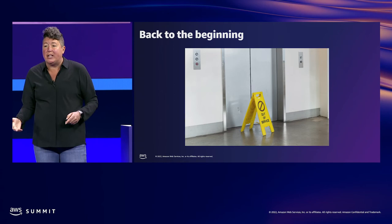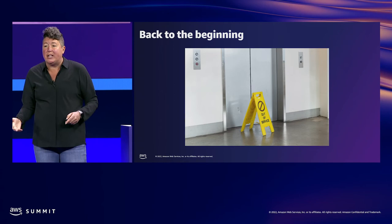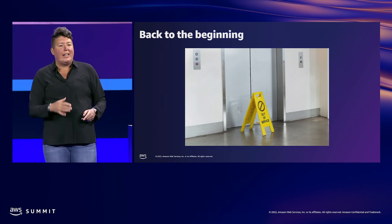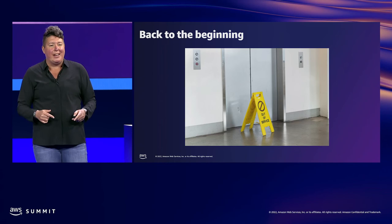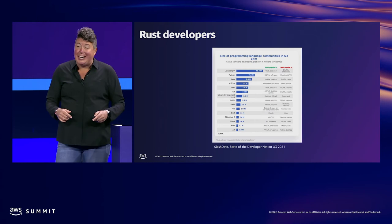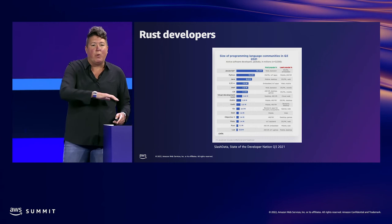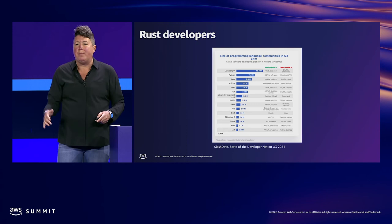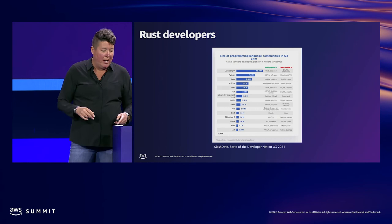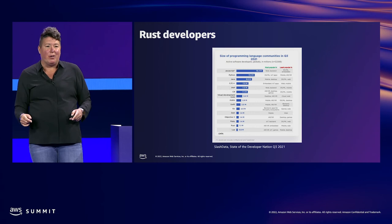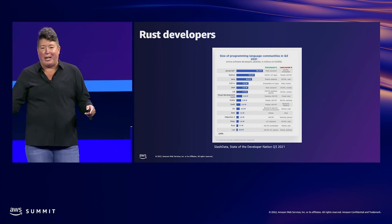Graydon worked by himself nights and weekends for four years. In 2010, he persuaded his employer Mozilla to invest in the Rust project. In 2015, almost a decade in the making, Rust 1.0 was launched. Today there are over one million Rust developers. The Rust developer community was the fastest growing in the last two years — coming from 400,000 developers in Q3 2019 to 1.1 million, almost tripling in two years by Q3 2021. But as you can see from the graph, Rust is still a relatively small developer community. So why isn't everybody using Rust?